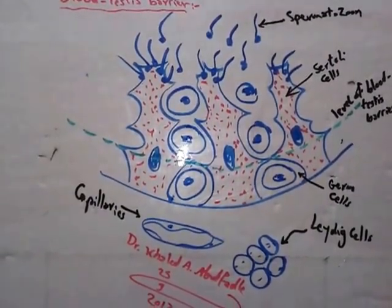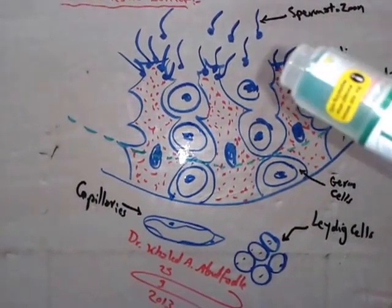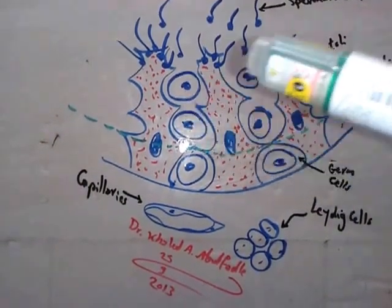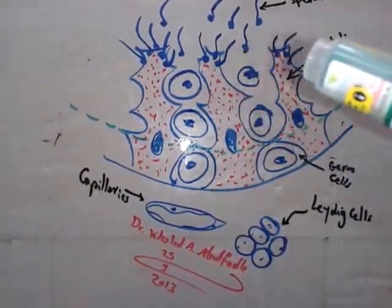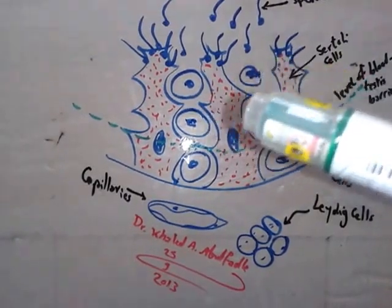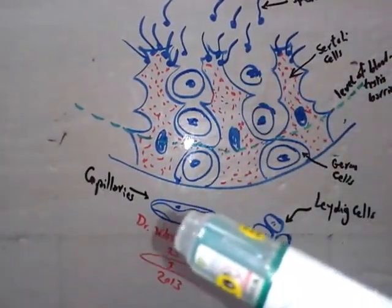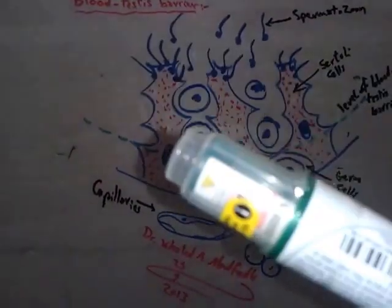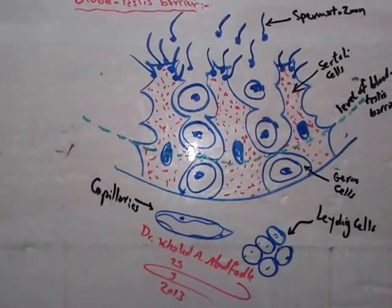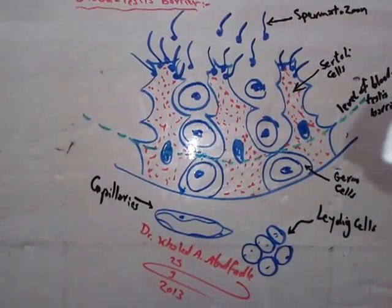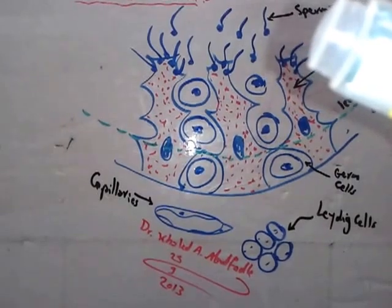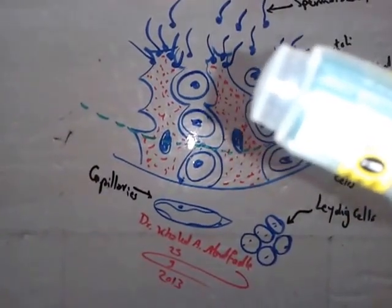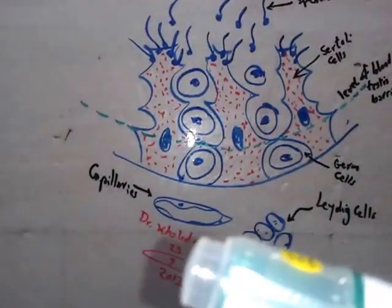It is a barrier between the seminiferous tubules and the interstitial capillaries. The Blood Testis barrier separates the testis seminiferous tubules and the capillaries in between.